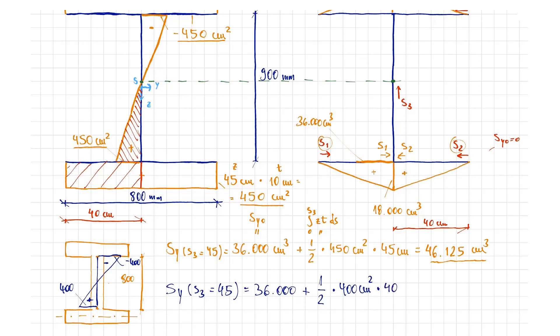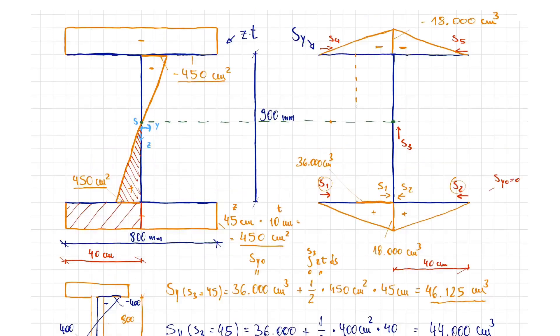Finally, we come back to the desired result of 44,000 cubic centimeters. The statical moment occurs as a high point in the distribution of the antiderivative Sy and corresponds to the position Z equals zero on the left. Upwards, Sy will fall back to 36,000 cubic centimeters.